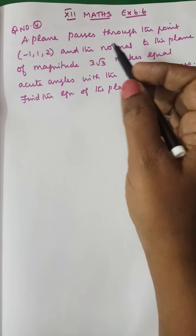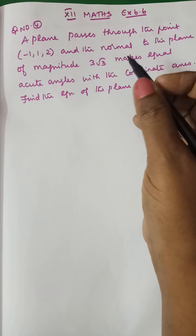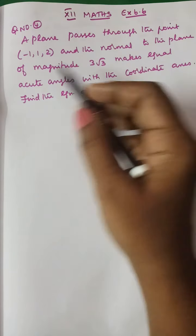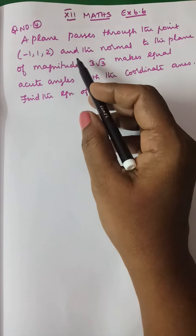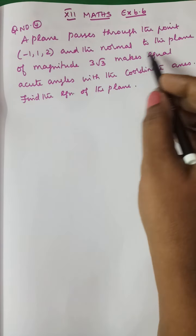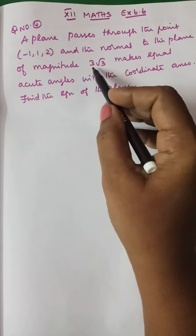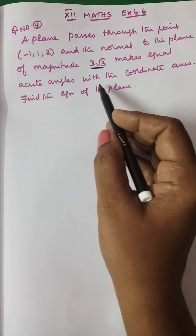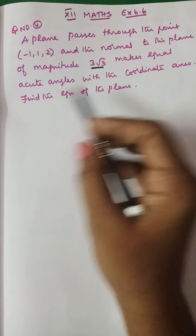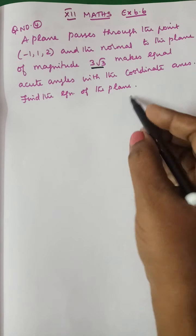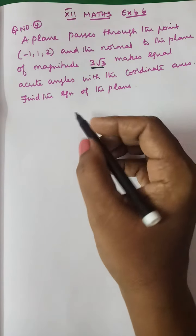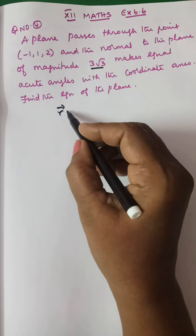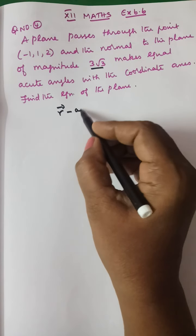Class 12, Exercise 6.6, Question number 4. A plane passes through the point (-1, 1, 2) and the normal to the plane of magnitude 3√3 makes equal acute angles with the coordinate axes. Find the equation of the plane. The formula is: R vector minus A vector, dot N vector, equals 0.